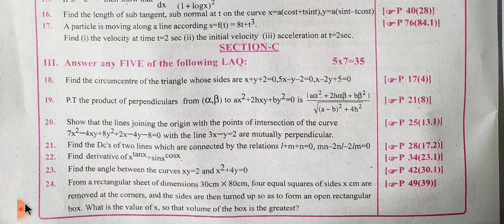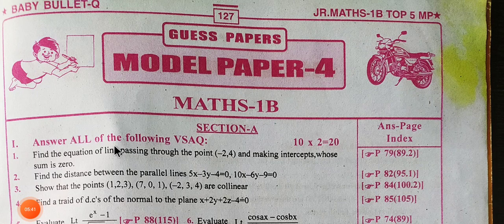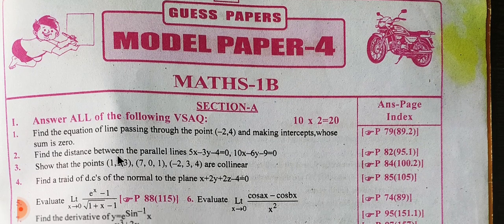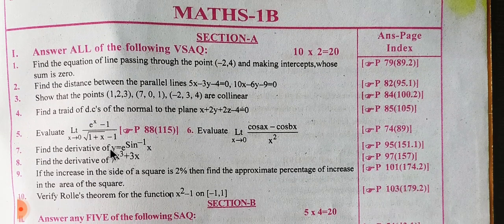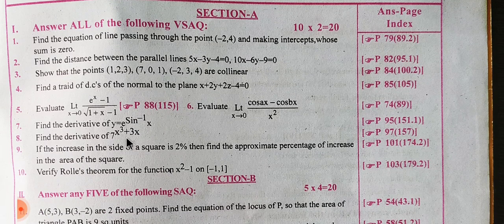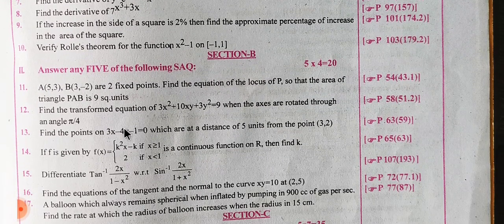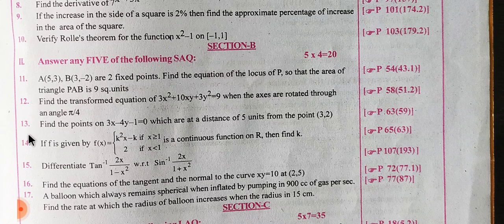This is the third paper and the fourth paper. This will be completed in model paper 4. Here is Section A. In Section A, you have two marks — you choose depth and automatically choose. Next in Section B, you have four marks.